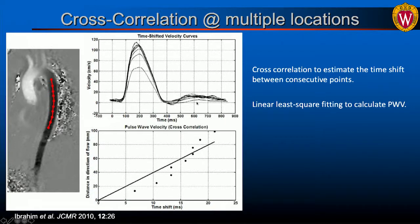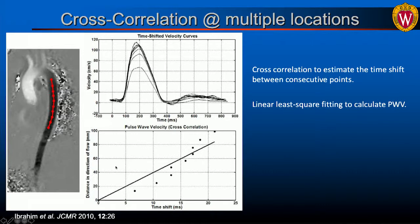Moving on to methodology developed to improve pulse wave velocity assessment: a study from Ibrahim et al. used cross-correlation at multiple locations — scan planes at different locations along the aorta. Although temporal resolution may not be truly sufficient to resolve all differences between consecutive planes, having a set of eight or nine measurements makes the overall result more robust than using just two planes. There are discrete jumps visible in the data due to insufficient temporal resolution, but averaging over all segments still provides a gain in robustness.